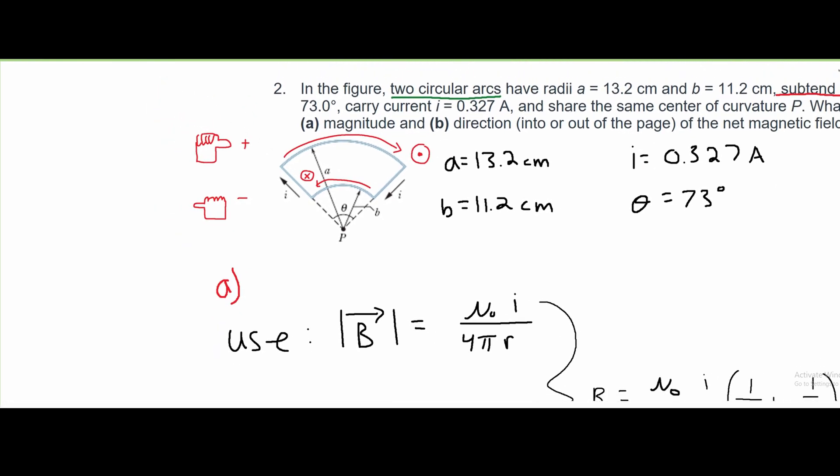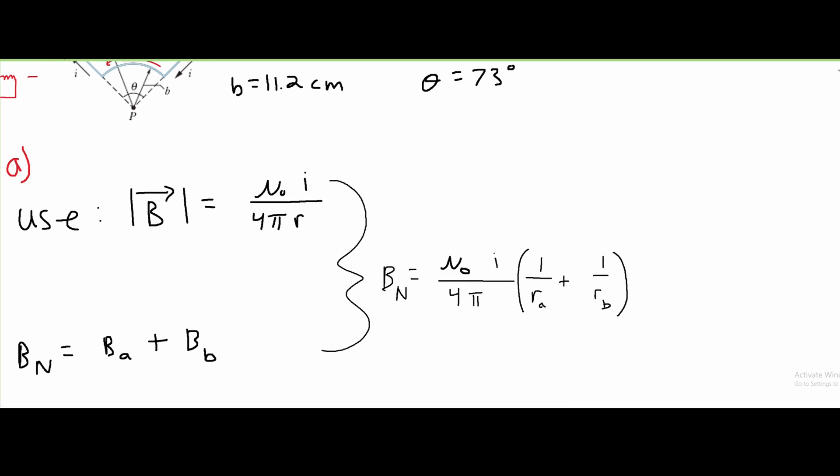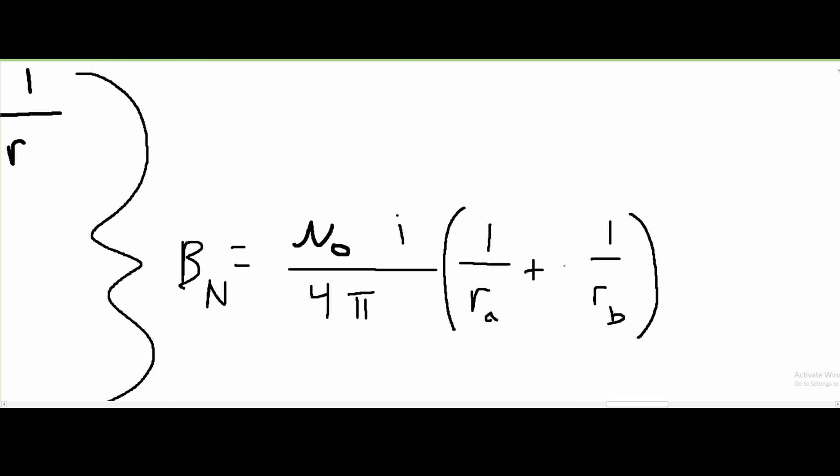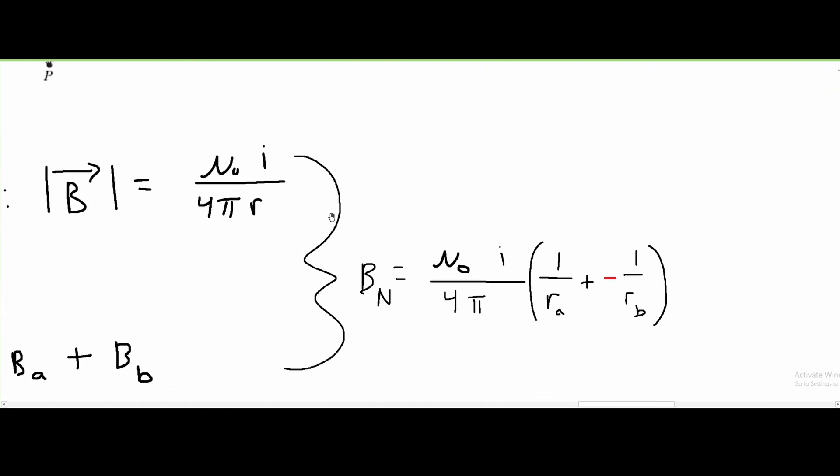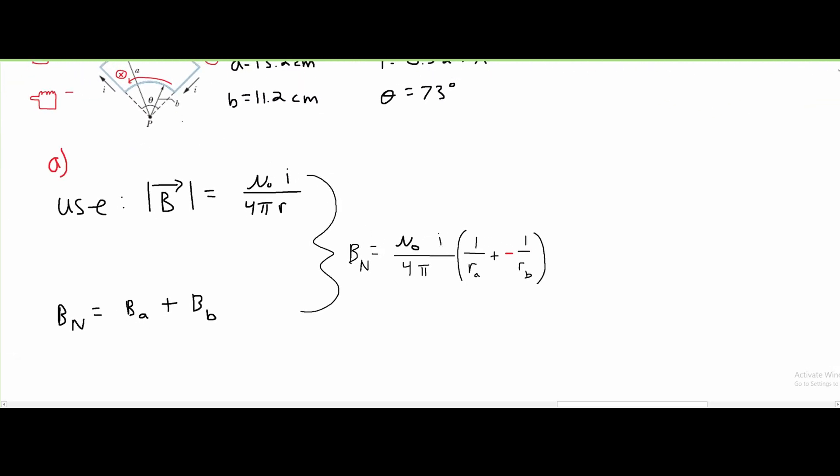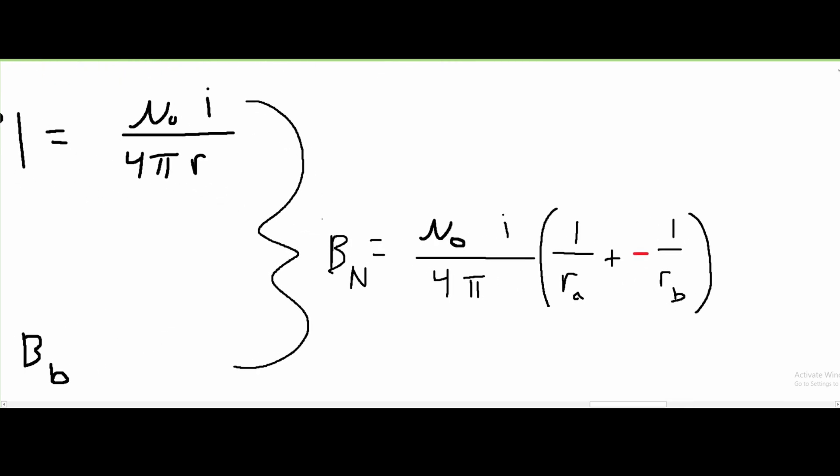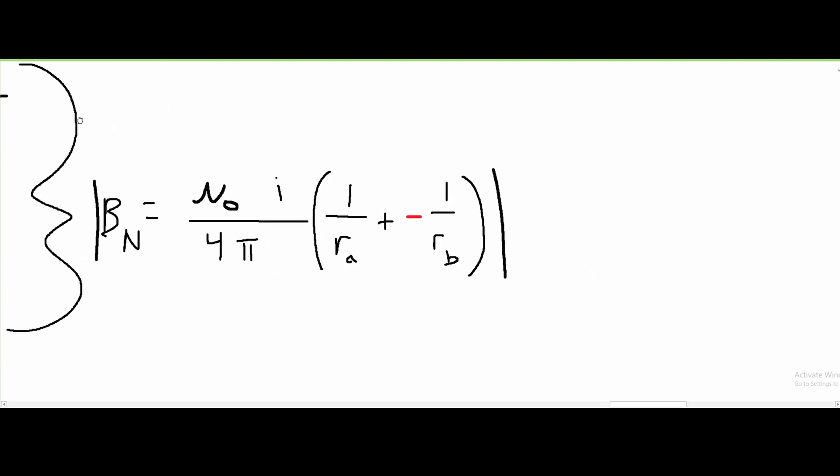So instead of adding these together, this is actually going to have a negative in front, since R_B is going in the negative direction. Our answer being negative or positive doesn't matter—it just denotes direction. This is going to be in absolute values because our magnitude will not be negative.